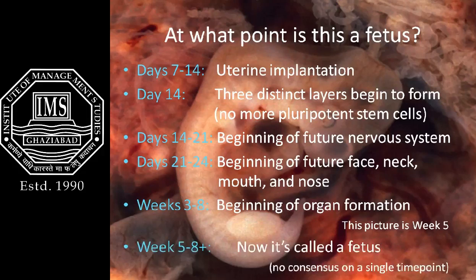By week 8 we have a fetus. Remember, embryonic stem cells used for research are harvested from 5 to 14 day old embryos — well before organ formation starts — and the consent of donors is always required to use embryos for research purposes.